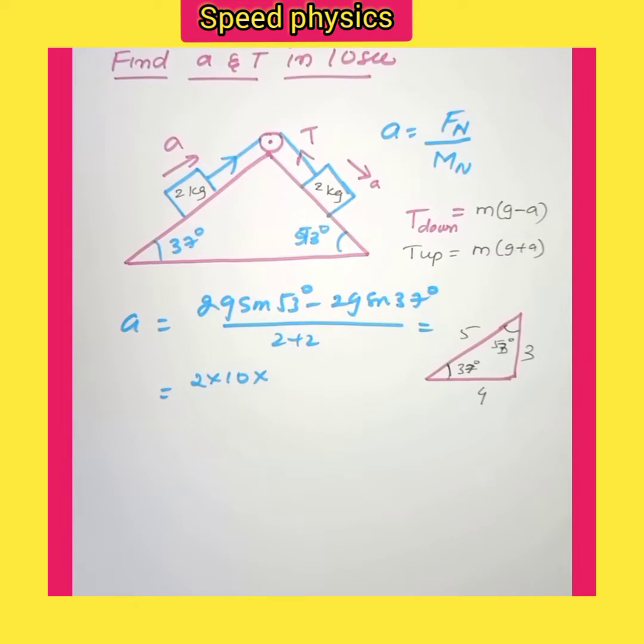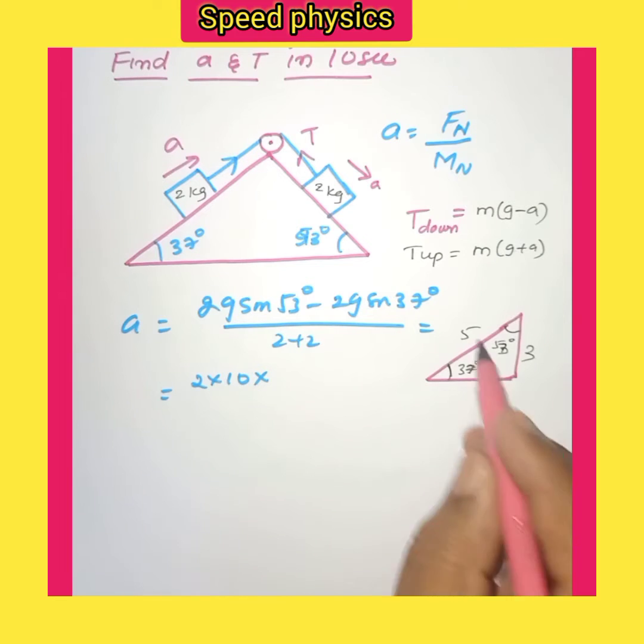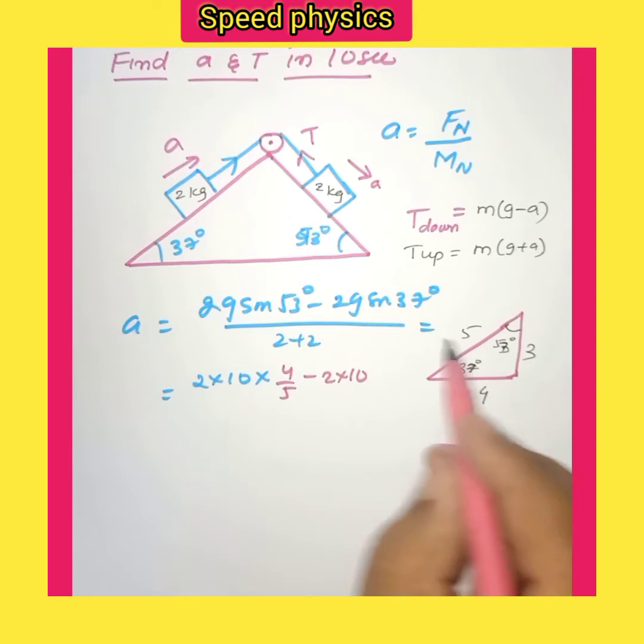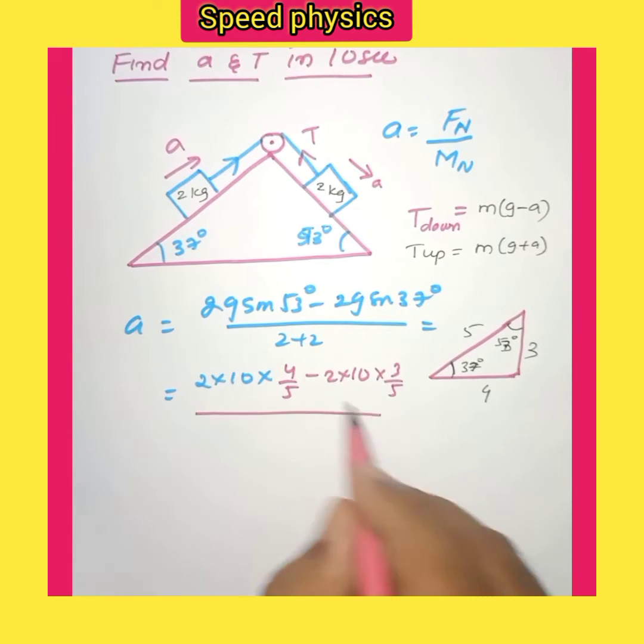Sin 53° is 4/5, so we have 2 times 10 times 4/5 minus 2 times 10 times sin 37° which is 3/5, all divided by 4.